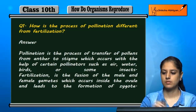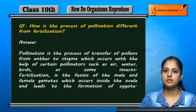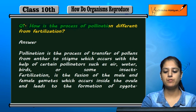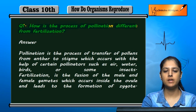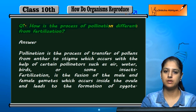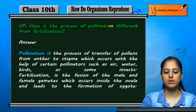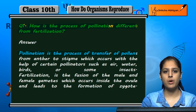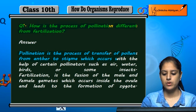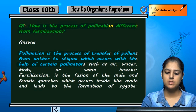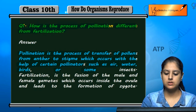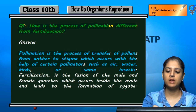Let us discuss a few questions. First, how is the process of pollination different from fertilization? Pollination is the transfer of pollen grains from the anther to the stigma, which occurs with the help of certain pollinators such as air, water, birds, or some insects.